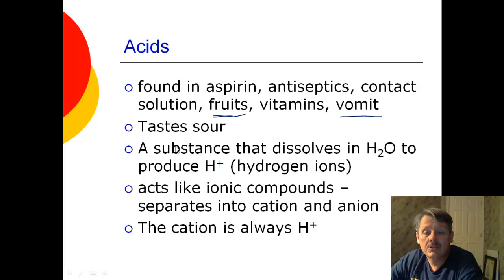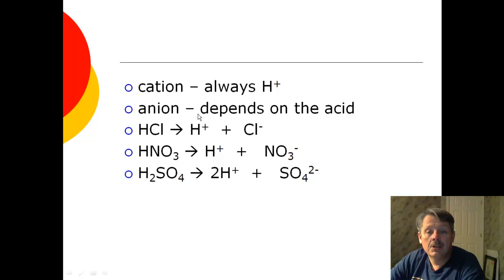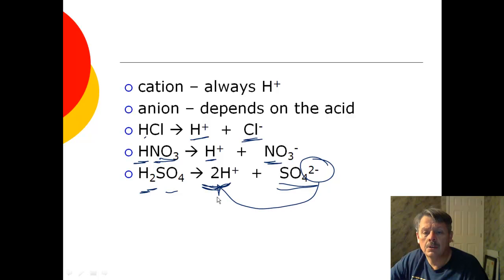So what is an acid? It's a substance that dissolves in water to produce hydrogen ions, H pluses. So it acts like an ionic compound. It separates into a cation and an anion. It's not an ionic compound, but it kind of acts like one. And the cation is always H pluses. That's why they all started with H. The anion is going to depend on the acid. So when HCl separates, it separates into H plus and Cl minus. Or when hydrogen nitrate separates, you get hydrogen and you get nitrate. And here you get hydrogen and you get sulfate. Notice you have two hydrogen ions, because it's H2SO4. And then you get sulfate, the sulfate ion as well, which has a two minus charge. That kind of tells you where the two came from, doesn't it?